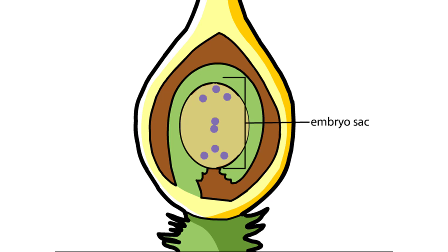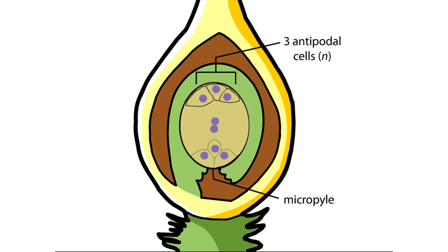Within the embryo sac, cell walls form between most of the nuclei. Three cells called antipodal cells form opposite the micropyle opening of the ovule. Three also form near the micropyle.